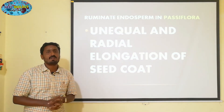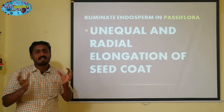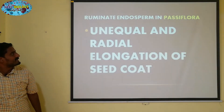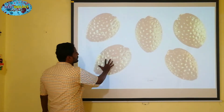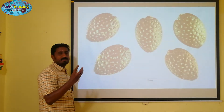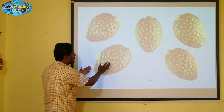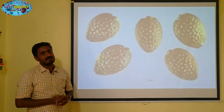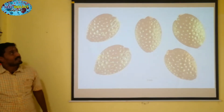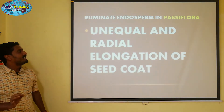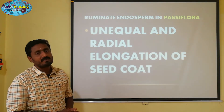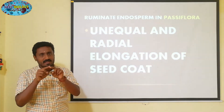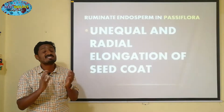Passiflora shows the unequal and radial elongation of the seed coat. In Passiflora, unequal and radial elongation of the seed coat cells causes the ruminate endosperm. Radial elongation is the key process here — in a particular cell, there are radial and tangential walls.